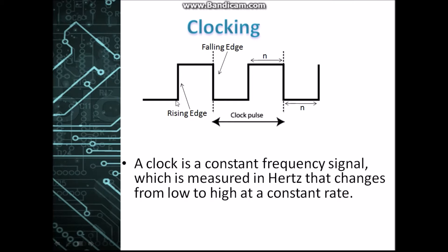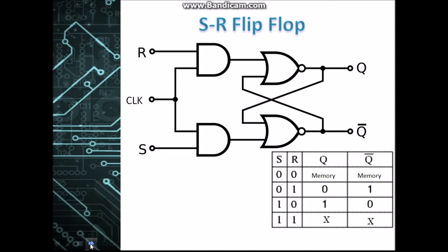The point where the pulse goes from low to high is called the rising edge, and the point where it goes from high to low is called the falling edge. When we attach a clock signal to an SR latch, we can create an SR flip-flop. This part of the flip-flop is identical to the latch shown earlier and operates in the same way. Let's call the outputs R* and S* at the AND gates.